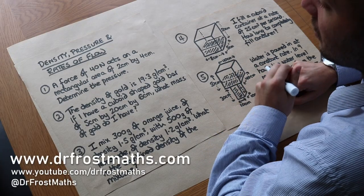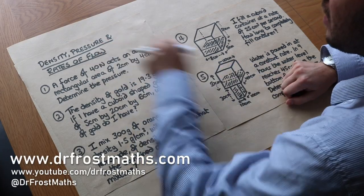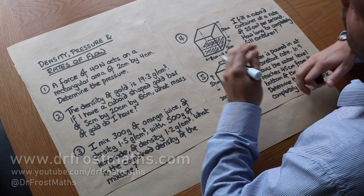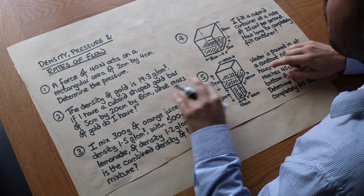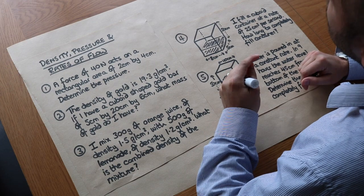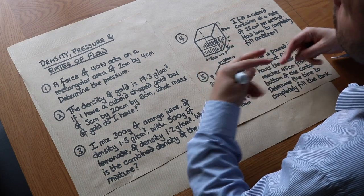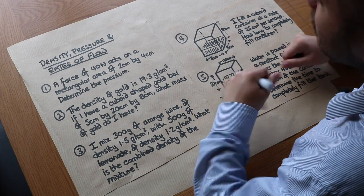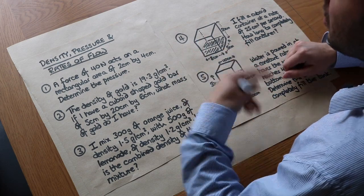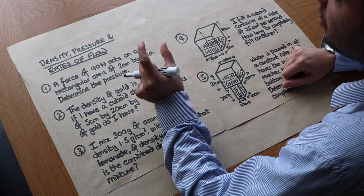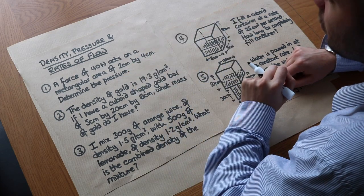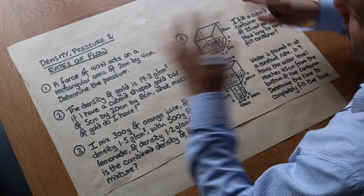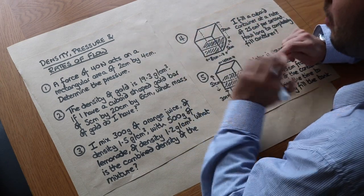Hello and welcome to this Dr Ross maths video on density, pressure, and rates of flow. This video is concerned with compound measures — quantities that combine multiple units, particularly where we use the word 'per'. For example, speed is metres per second, or miles per hour — how many miles you're travelling in each hour — although speed-distance-time is covered in a separate video.